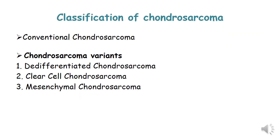We will start with the classification of Chondrosarcoma. Chondrosarcoma is a malignant tumor of bone capable of chondroid formation — it can produce cartilaginous matrix. We have conventional Chondrosarcoma, the classic form, and then Chondrosarcoma variants, which include De-Differentiated Chondrosarcoma, Clear Cell Chondrosarcoma, and Mesenchymal Chondrosarcoma.